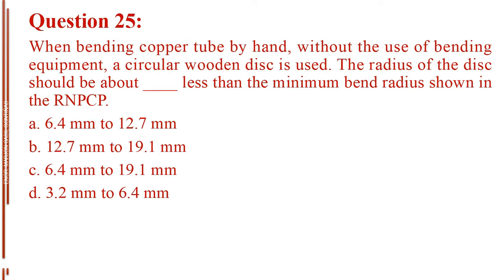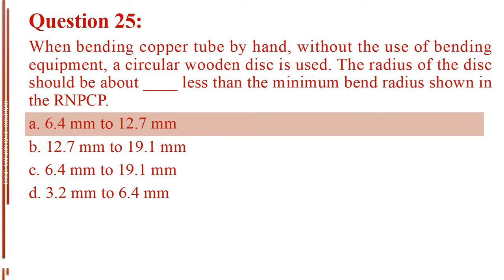Question number 25. When bending copper tube by hand, without the use of bending equipment, a circular wooden disk is used. The radius of the disk should be about blank less than the minimum bend radius shown in the RNPCP. Letter A, 6.4 mm to 12.7 mm. Letter B, 12.7 mm to 19.1 mm. Letter C, 6.4 mm to 19.1 mm. Letter D, 3.2 mm to 6.4 mm. The answer is Letter A, 6.4 mm to 12.7 mm.